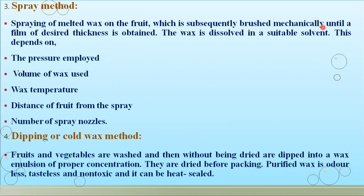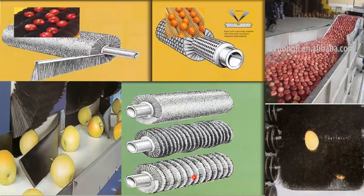During the spray method, brushes are used simultaneously to ensure uniform application of the waxing material. The wax is dissolved in a suitable solvent, and application depends on the pressure employed, volume of wax, wax temperature, distance of the fruit from the spray, and the number of spray nozzles used. The fourth method is the dipping or cold wax method, in which fruits and vegetables are initially washed and then, without being dried, dipped into a wax emulsion of proper concentration and then dried before packing. The purified wax is odorless, tasteless, non-toxic, and can be heat-sealed.